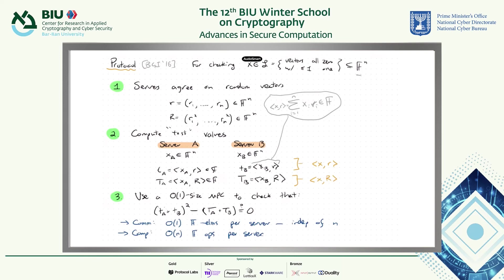Rather than checking the client's potentially huge input directly — N could be 10,000 or 100,000 counters — we've reduced this all, using this sketching technique, to a constant-size multi-party computation, which can be done by exchanging about 100 bytes between the servers. The communication is a constant number of field elements per server, independent of the input size N, and the computation is a linear number of field operations per server with no hidden scary constants.